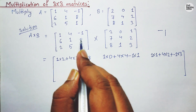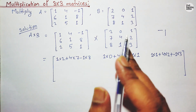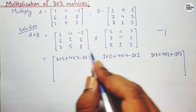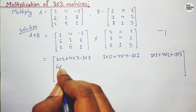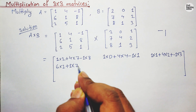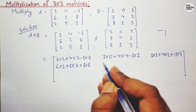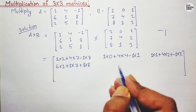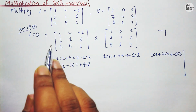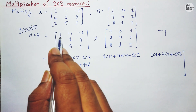Now we will multiply the second row with each and every column element. So for element (2,1): 6×2 plus 1×7 plus 8×8. For element (2,2), I hope you know the numbering of each element by row and column. The first index refers to the row and the second to the column.